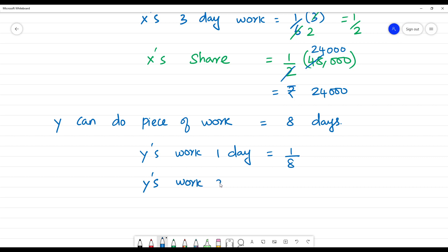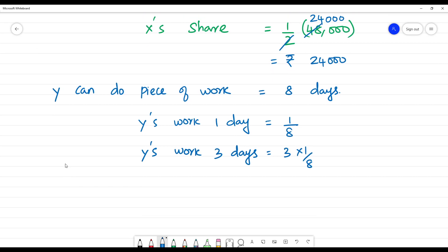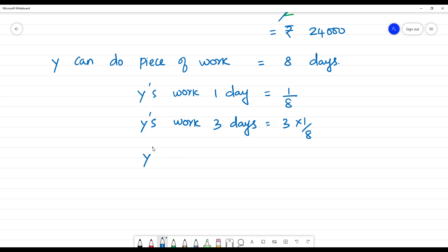Y's work in 3 days is equal to 3 into 1/8, which is 3/8. So Y's share is equal to 3/8 into 48,000, which equals 18,000.